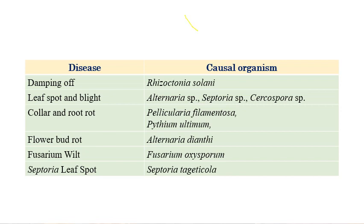The first disease is damping off, which is caused by Rhizoctonia solani. Next is leaf spot and blight, caused by Alternaria, Septoria, and Cercospora species. Collar and root rot is caused by Pellicularia filamentosa, and Pythium ultimum is also involved. Flower bud rot is caused by Alternaria dianthi. Fusarium wilt is caused by Fusarium oxysporum, and Septoria leaf spot is caused by Septoria tageticola.